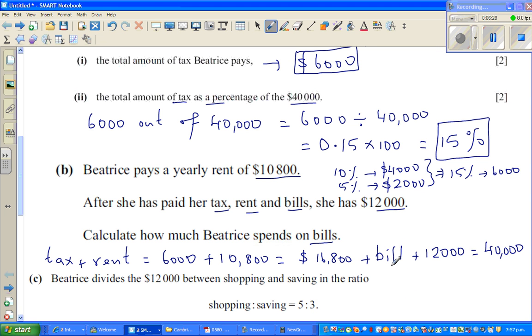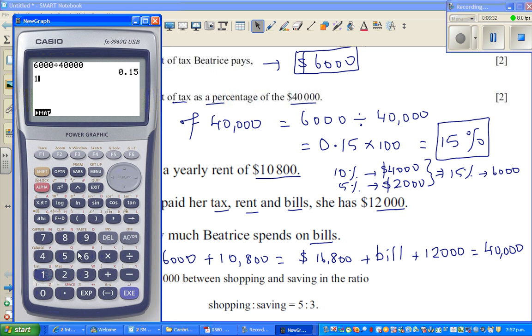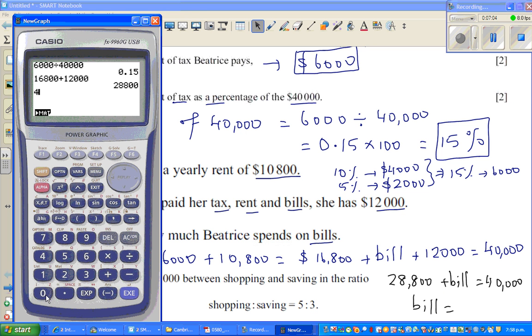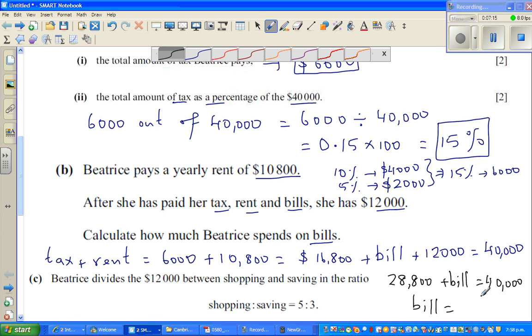We can think in different ways also. So this is $16,800 plus $12,000 is $28,800. So $28,800 plus bill should give you the total amount. So if you take away $28,800 from $40,000, you'll get the bill. So bill would be $40,000 take away $28,800. That is $11,200 is for bills.